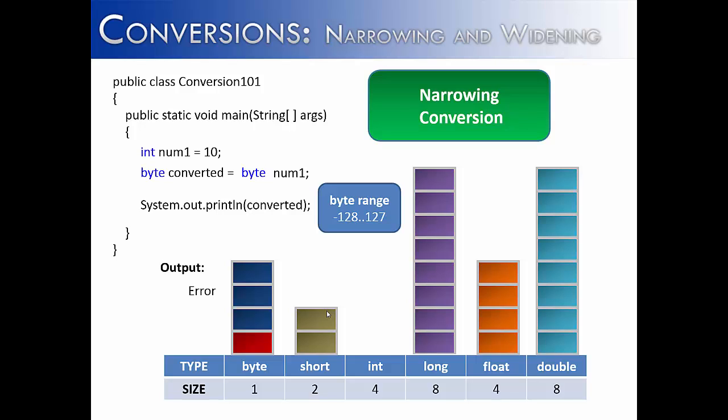to run this program right now, unfortunately, I would still get an error. And the reason is that with typecasting, you must include parentheses around the data type. So you can't just say byte num one. You have to say parentheses byte and parentheses num one. And then when we do that and run the program, we would get 10.